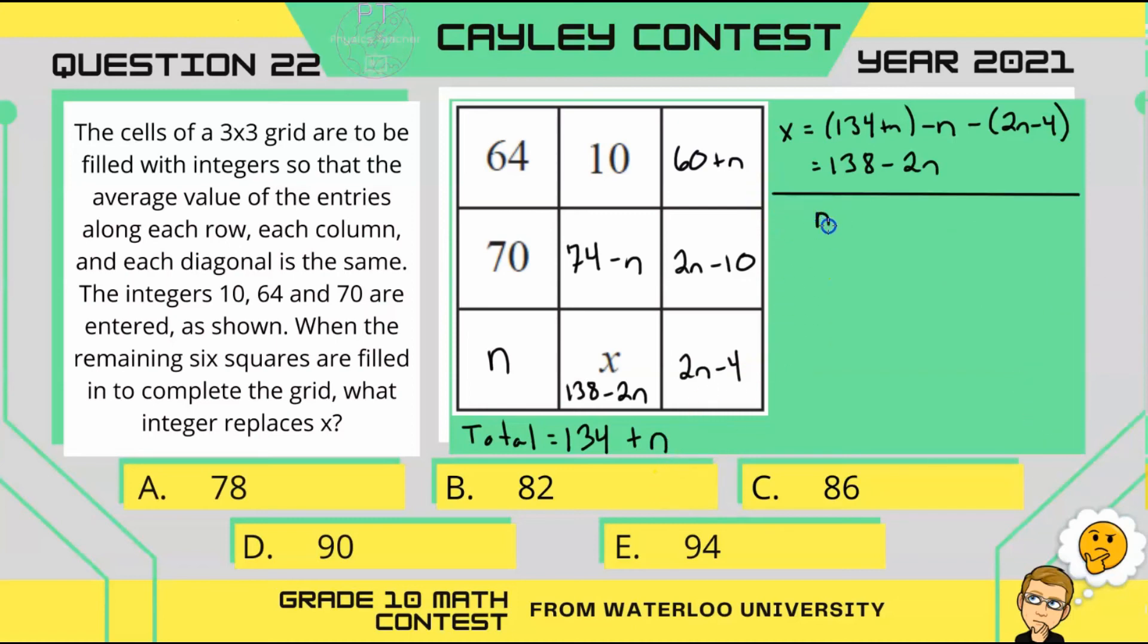So, now that we know that n equals 22, we can solve for x, where x was 138 minus 2n, where n is 22, which gives us 138 minus 44, which is 94.